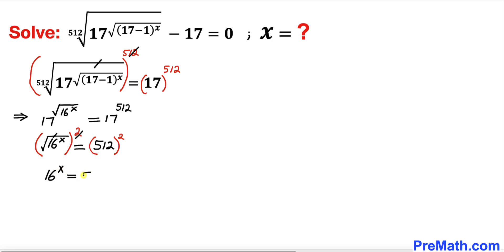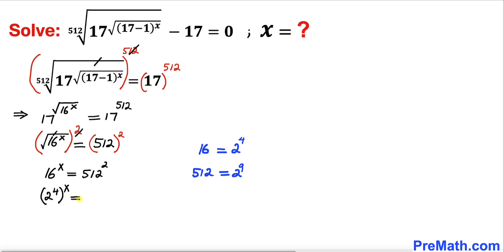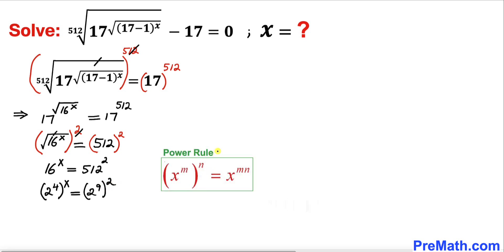Now let's focus on the base 16. 16 can be written as 2 power 4, and likewise 512 can be written as 2 power 9. So the left hand side becomes 2 power 4 whole power x, equals 2 power 9 then whole square.